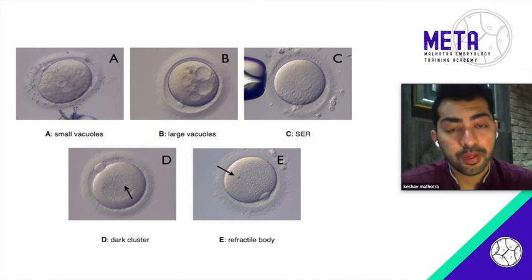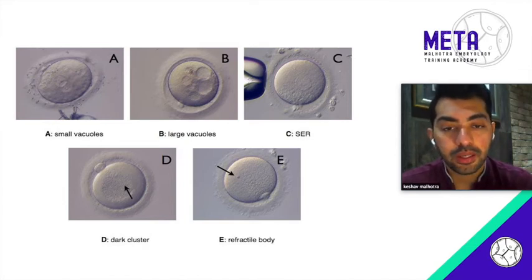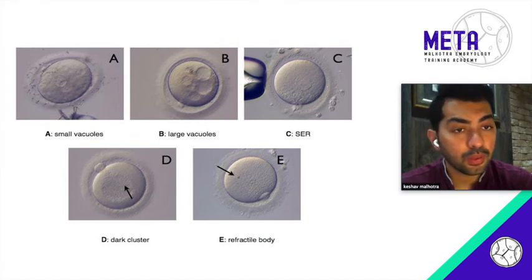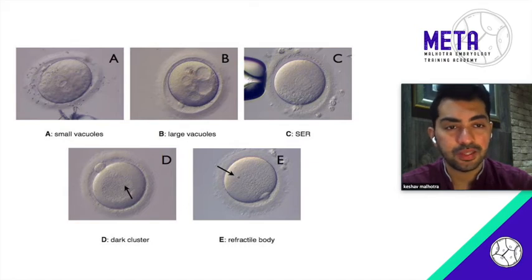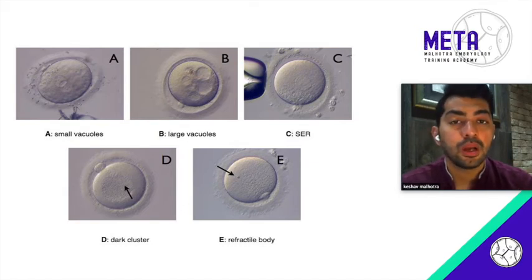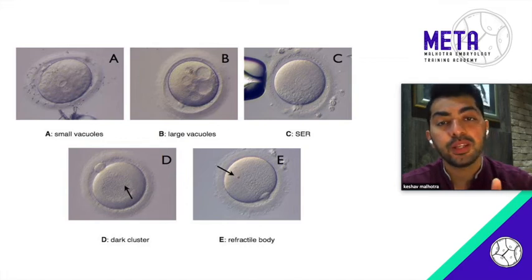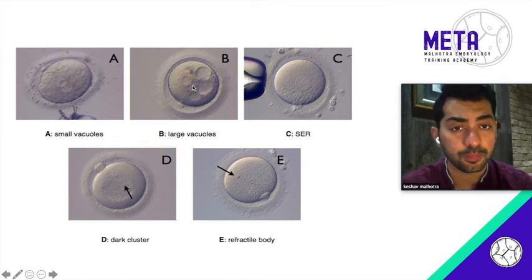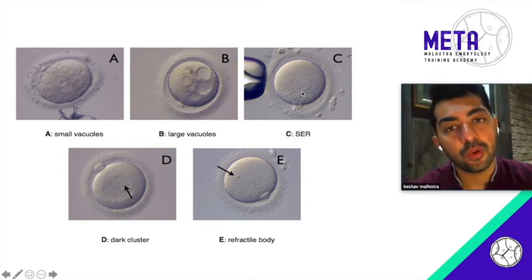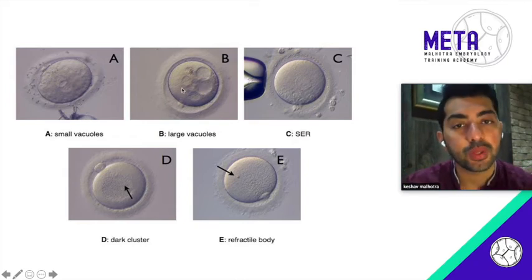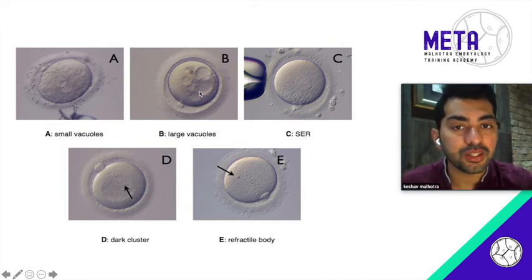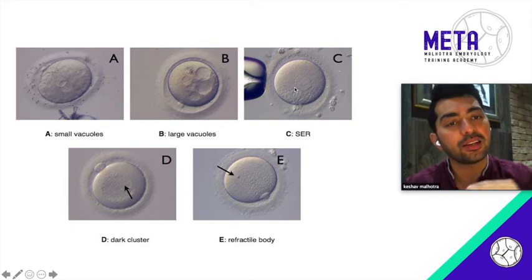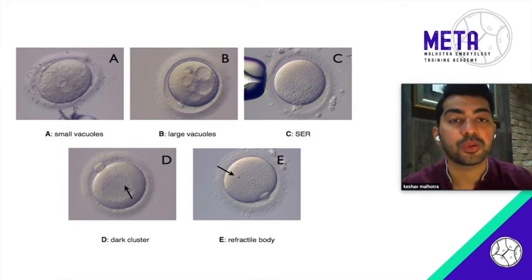Inclusion bodies are very important to notice. There are three kinds to worry about: vacuoles, SERs, and refractile bodies. One or two small vacuoles are not a major concern, but multiple vacuoles as seen in image three will not give you the best outcome. SERs are flat disc-like structures — unlike vacuoles which have depth and cast a shadow, SERs have no depth; they are flat and will vanish when you change the focus of the microscope.